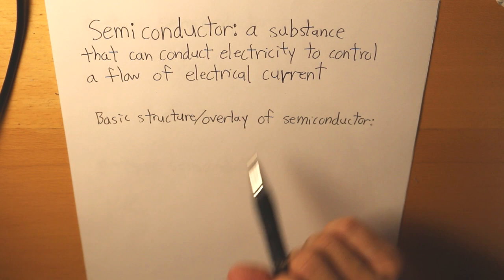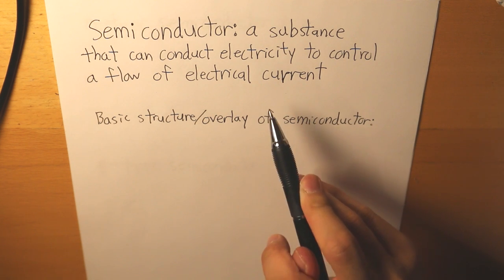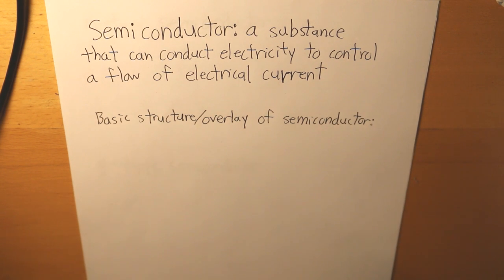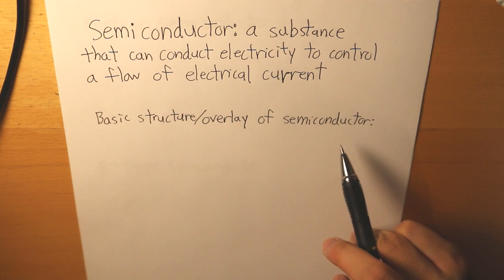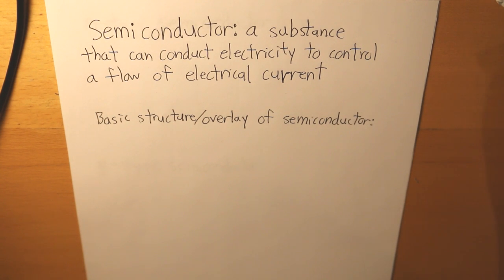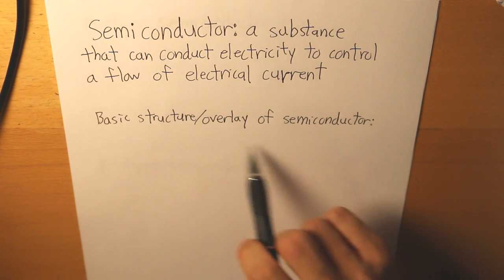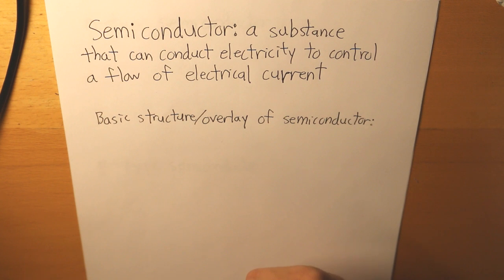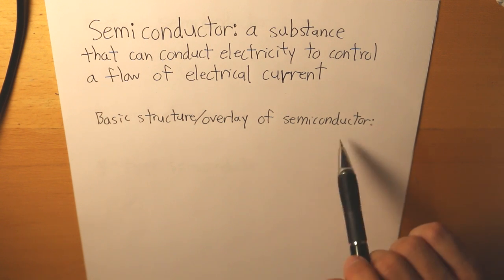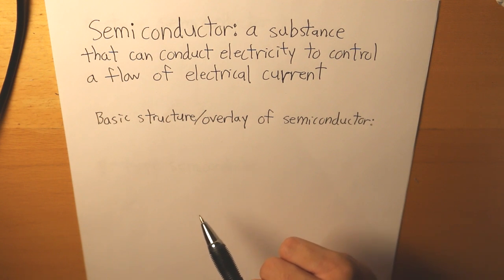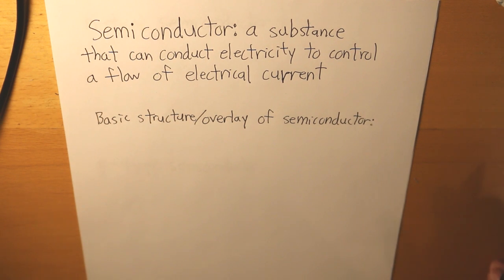A semiconductor is a substance that can conduct electricity to control a flow of electrical current. The basic structure of semiconductors is simply atoms joined together, and these atoms have to create really strong bonds to conduct and control electrical current. Semiconductors usually consist of atoms that have four valence electrons, and these atoms bond with other atoms that also have four valence electrons, continuing on to create these really strong bonds.